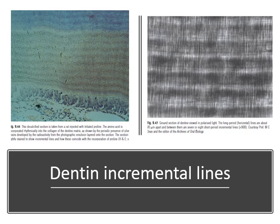As far as dentine is concerned, it also has two types of lines — short period and long period — similar to enamel. The short period lines in dentine are known as lines of von Ebner, which indicate the daily deposition of dentine. The long period lines, viewed in ground sections under polarized light microscopy, are known as lines of Andresen, showing the weekly deposition of dentine.